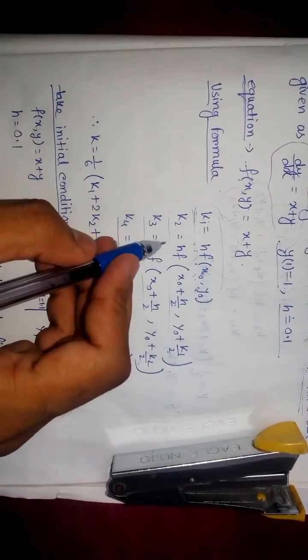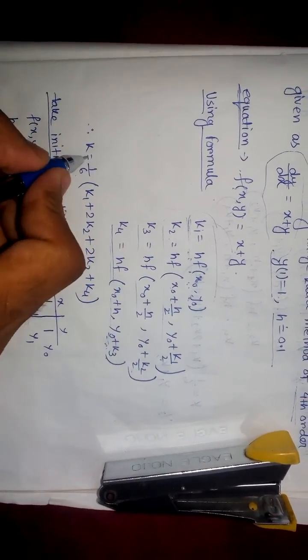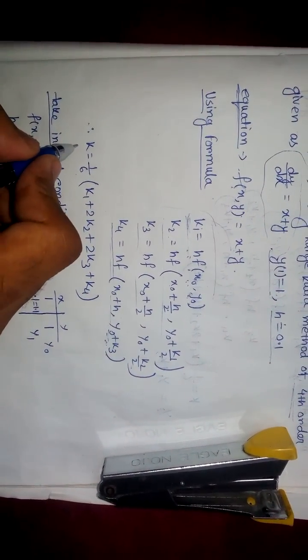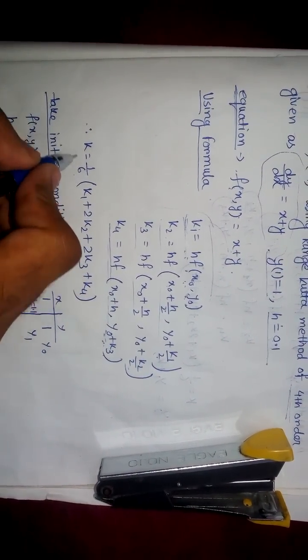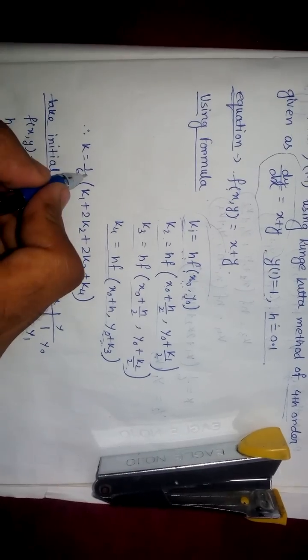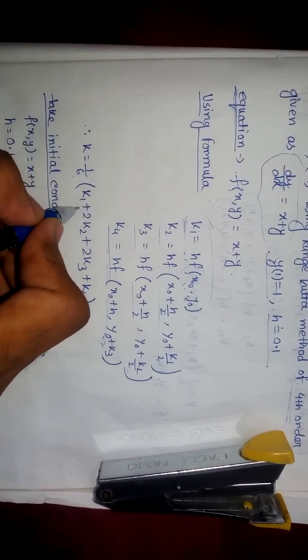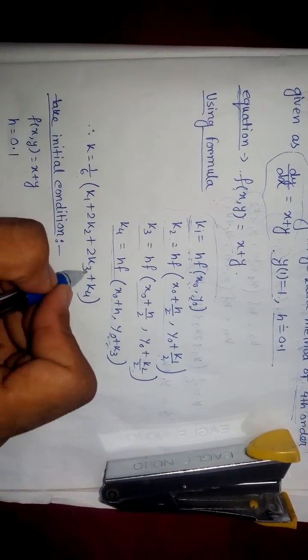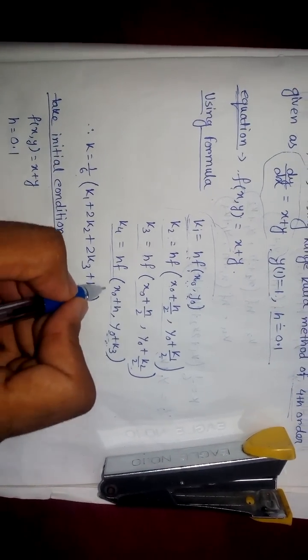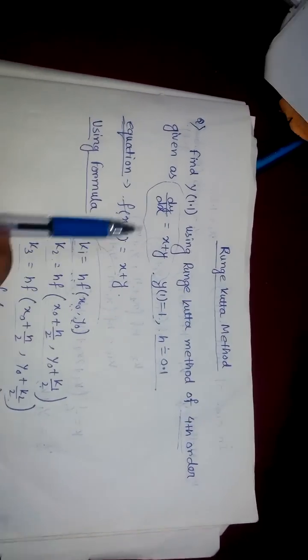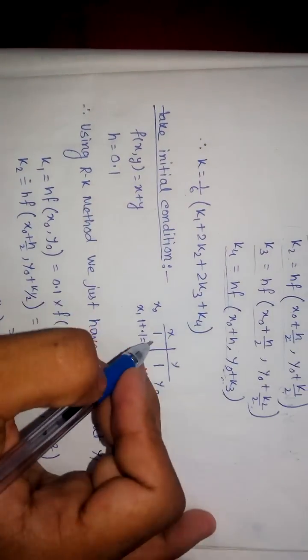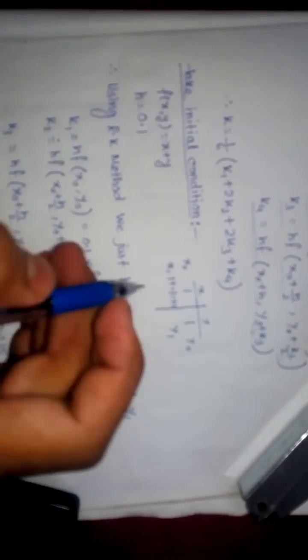After getting the k1, k2, k3, k4 values, we calculate the overall K. The formula for K is: K = (1/6) × (k1 + 2k2 + 2k3 + k4). By this we will get K. Now for our question, we first take the initial condition.